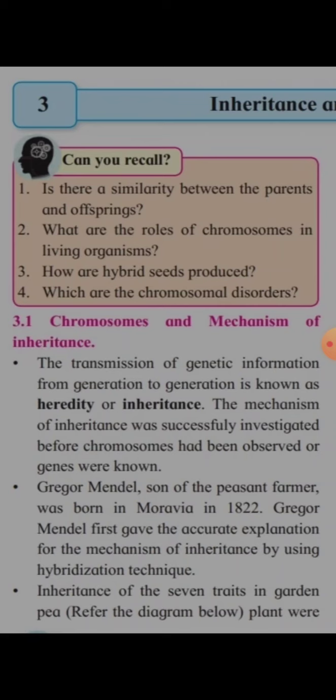Gregor Mendel used the garden pea plant, and this garden pea had different traits. For this study, he observed the inheritance of seven traits of this plant and then made data out of that.